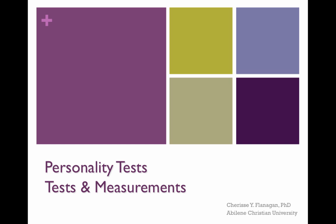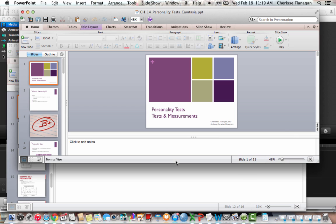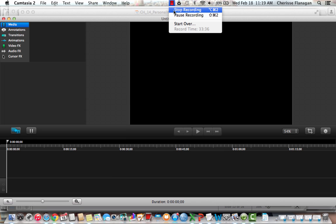So that brings us to the end of the introduction to personality testing. To summarize: we talked about objective versus projective testing, looked at the most commonly used objective and projective tests, and then looked closely at two objective personality tests — the MMPI and the NEO.